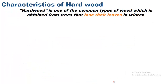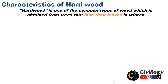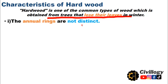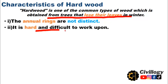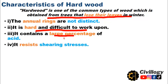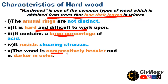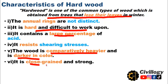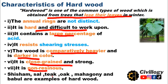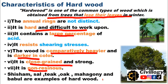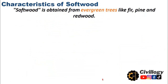Characteristics of hardwood: hardwood is obtained from trees that lose their leaves in winter, i.e., trees with broader leaves. The annual rings are not very distinct. It is hard and difficult to work upon, contains a large percentage of acid, and resists shearing stresses. The wood is comparatively heavier and darker in color, close-grained and strong, and non-resinous. Examples include shisham, sal, teak, mahogany, and babul.